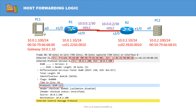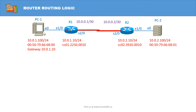So the forwarding logic at the host level is to forward the packet to the default gateway when it sends the packet to a different subnet. As soon as the Ethernet frame arrives at Router 1, Router 1 sees that the destination MAC address is the MAC address of its interface E10, so it will process the frame.